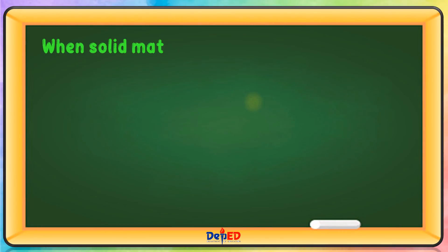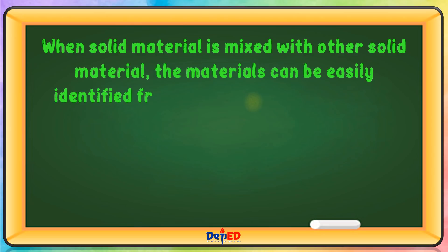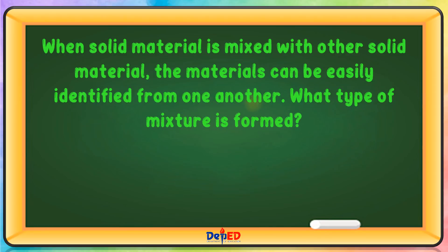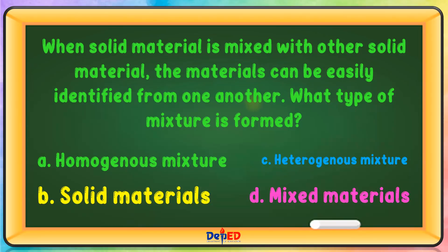When solid material is mixed with other solid material and the materials can be easily identified from one another, what type of mixture is formed? A. Homogeneous mixture. B. Solid materials. C. Heterogeneous mixture. Or D. Mixed materials. The correct answer is C.